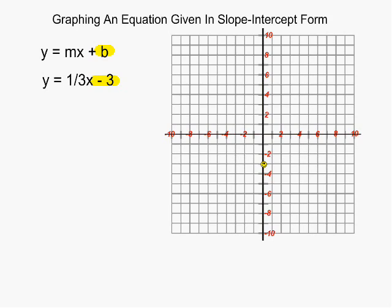Once we have our starting point established, what we do then is we identify the slope of the equation. The slope is located right in front of our x-term. The m is the variable used for the slope of this equation and we can see that 1/3 is in front of the x.